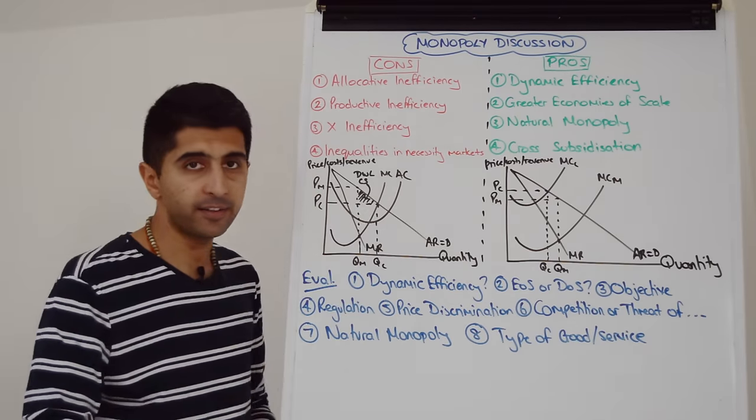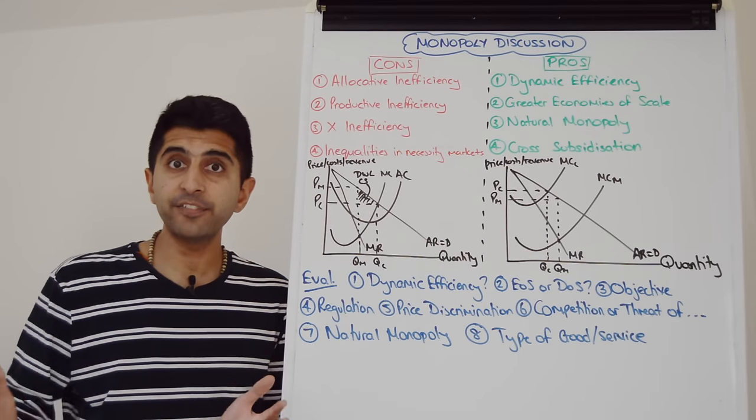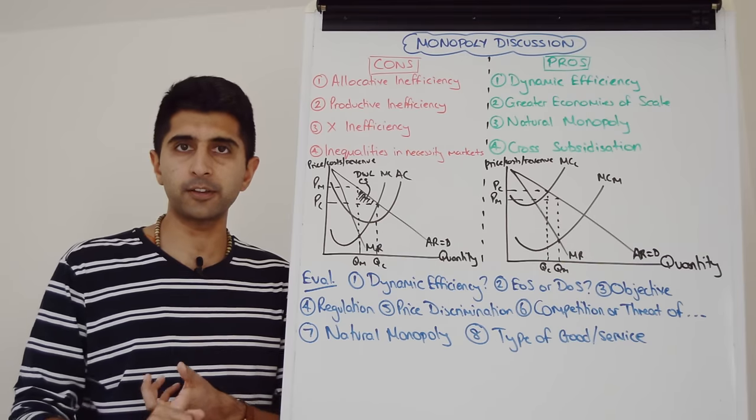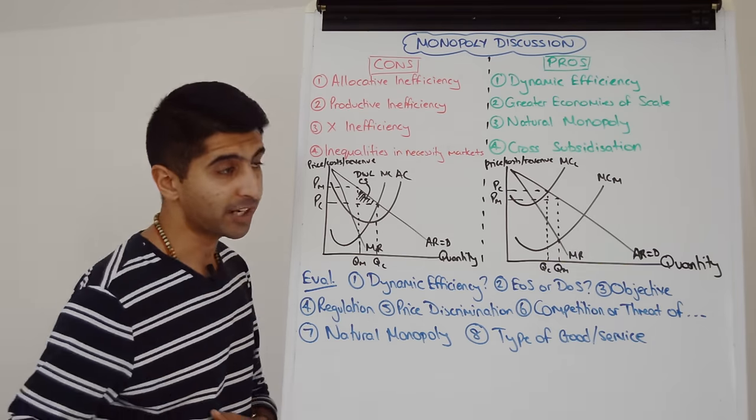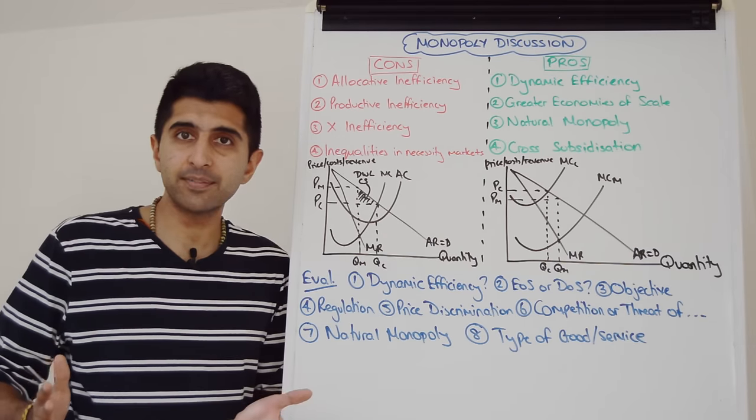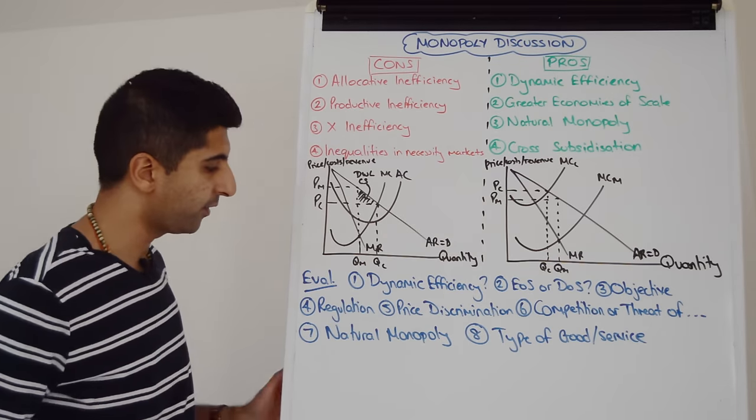But what if the objective of the monopolist is a bit more better for society? If it's something like sales maximization or if it's something like a CSR that they're promoting, who knows their objective might be to actually be allocatively efficient. So we can always question the objective of the firm.